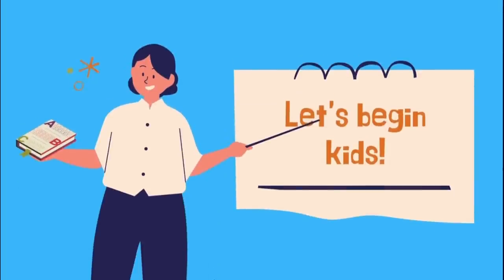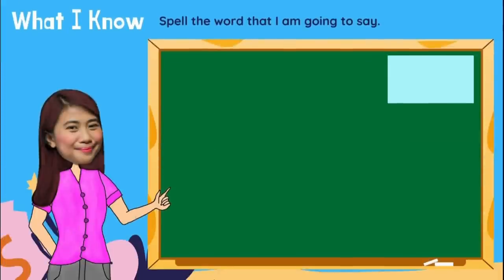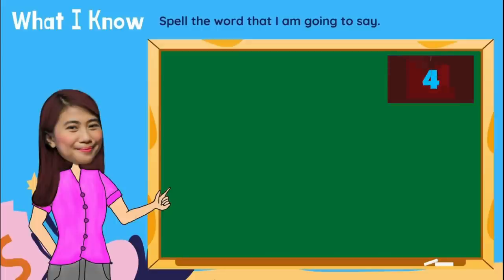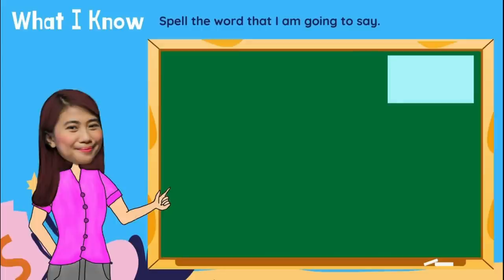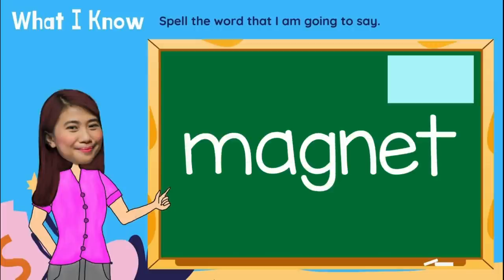Let's begin, kids! What I know! Spell the word that I am going to say. Are you ready? Kids, be careful with your spelling. Number one, spell the word magnet. Type now your answer in the comment box. And the spelling of the word magnet is M-A-G-N-E-T. Magnet. If this is your answer, very good!